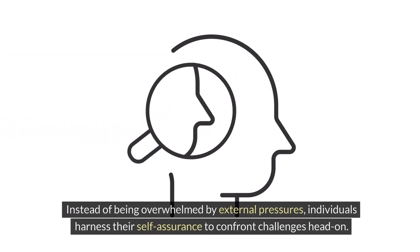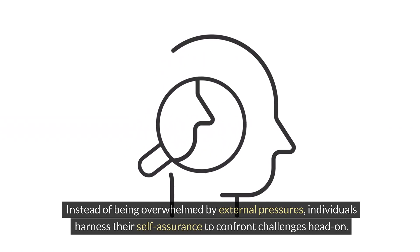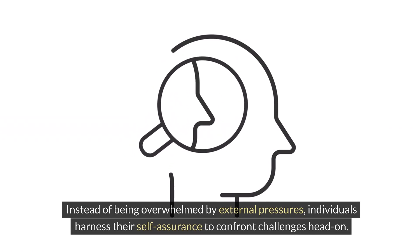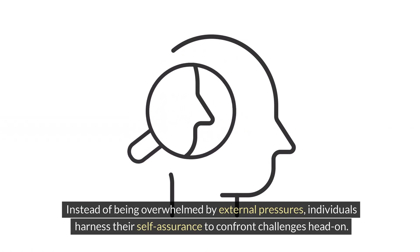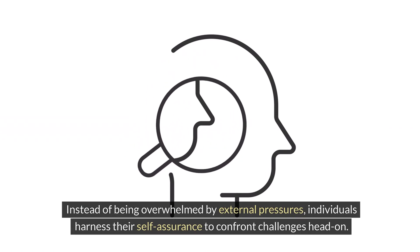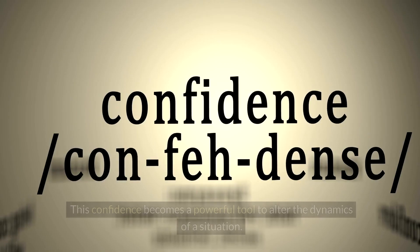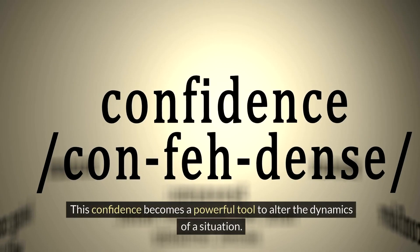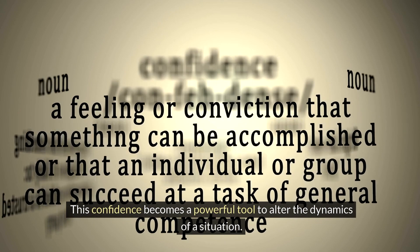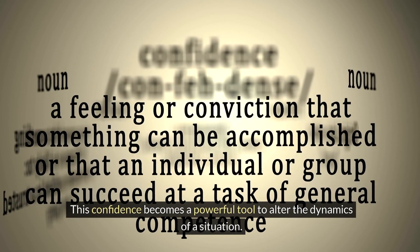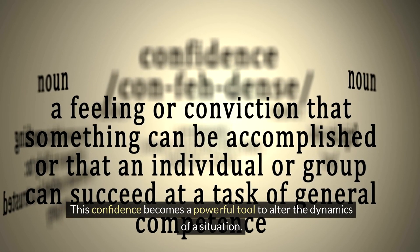Key principle one — confidence as a weapon. Reverse intimidation revolves around building and projecting confidence. Instead of being overwhelmed by external pressures, individuals harness their self-assurance to confront challenges head-on. This confidence becomes a powerful tool to alter the dynamics of a situation.